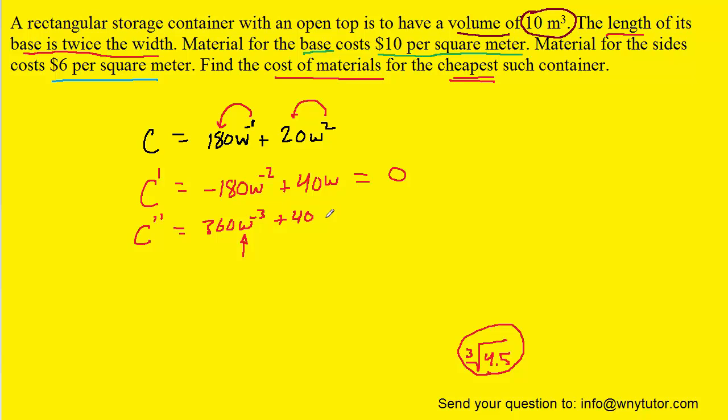No matter what value for w we plug in, the second derivative will always be positive. It will always be greater than 0. A positive second derivative shows that the cost function is concave up for all values of w. That means that our critical number was located at a minimum. So this indeed confirms that this value of w minimizes the cost.